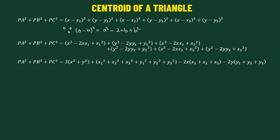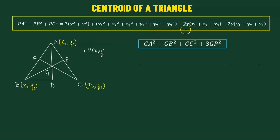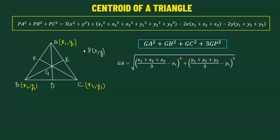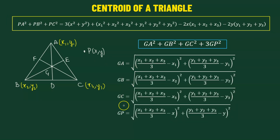Now we'll go to the right-hand side of the expression. We'll try to figure out the value for GA² + GB² + GC² as well as 3GP² in terms of the coordinates of A, B, C, and P. Using the distance formula, GA is the square root of the x-coordinate of G minus x1 squared, added to the y-coordinate of G minus y1 squared. We then find GB, GC, and GP using the same technique.